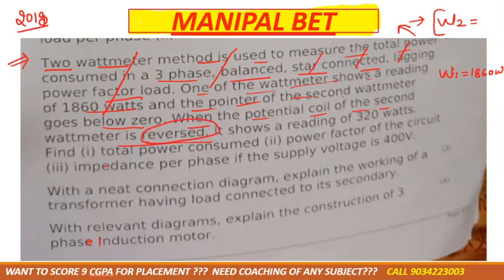So W2 reading is 320. When you have minus to the left, and the connection is reversed, we take the reading as negative. But here in the question, they have already stated that the connection was reversed — meaning they have already reversed it — so we do NOT take it as negative again; it will be positive.